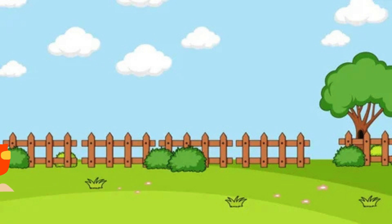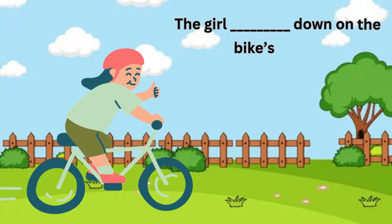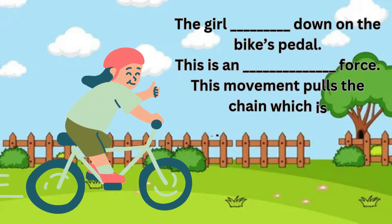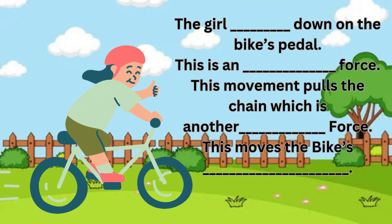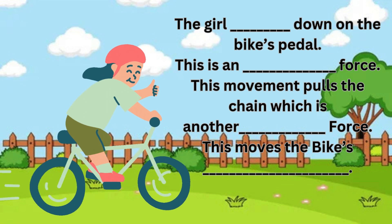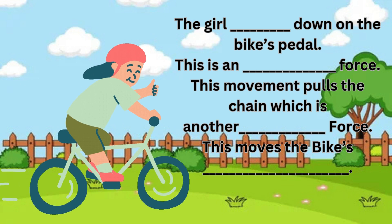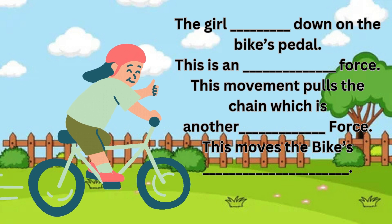From these two examples, you can see that an applied force happens when an object is pushed or pulled by another object. The other object can be a person, a machine, or a machine part. Now, complete these sentences: A girl pushes down on the bike pedal — this is an applied force. This movement pulls the chain, which is another applied force. This moves the bike's wheels.